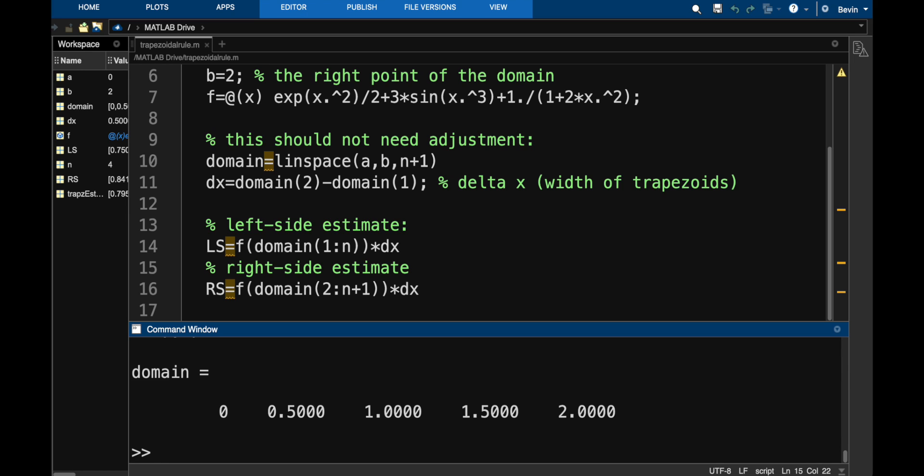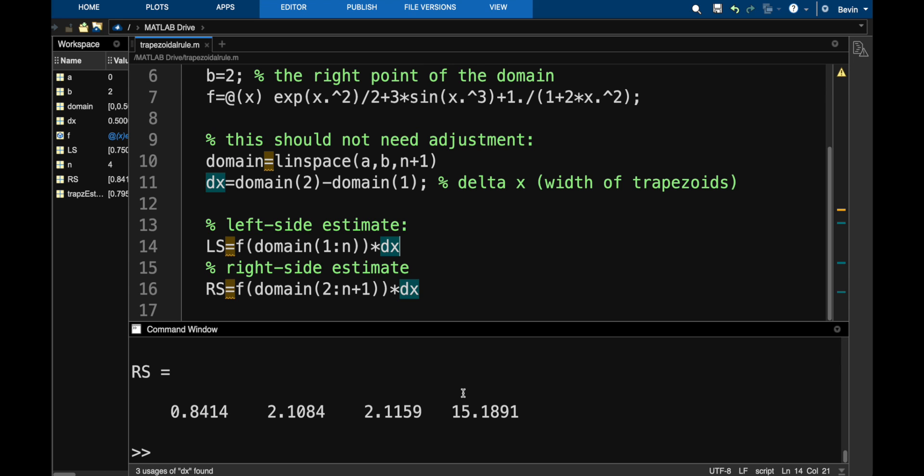Now there's something I forgot to do on lines 14 and 16, and that is actually add up these terms. So if I run this so that we can see what lines 14 and 16 produce in the command window. Notice that rs is a vector with four entries. This entry is the value of f at the first right point. So that was actually f at 0.5 times delta x. Then this is f at 1 times delta x, f at 1.5 times delta x, and f at 2 times delta x. So what I need to do to actually get the sum is use the sum command for each of these.